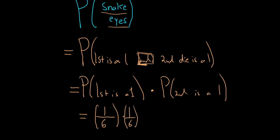You have a fraction times a fraction, so you multiply across the numerator and denominator. You get one times one, which is one, and six times six, which is 36. So the probability of getting snake eyes is 1/36. I hope this video has been helpful.